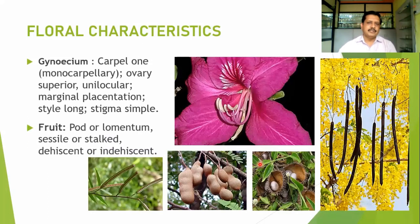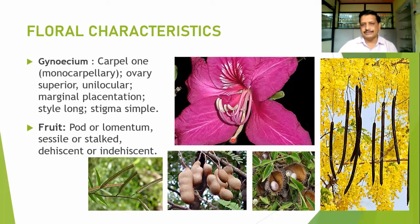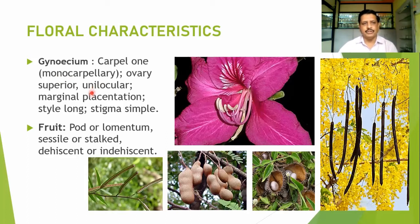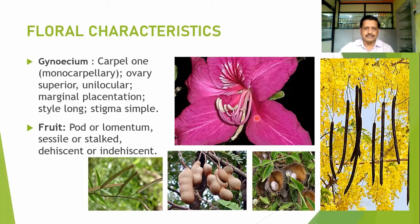When we talk about the gynoecium, there is a typical structure with stigma, style, and a short stalk-like structure at the base — that is the gynophore. Gynoecium is normally single, monocarpellary. Ovary is always superior and unilocular with marginal placentation — all leguminous subfamilies have marginal type of placentation. Styles are long and stigma mostly simple, though slightly capitate type of stigma can also be observed. This variation can be found genus to genus in this family.